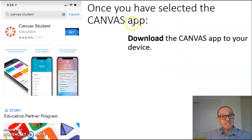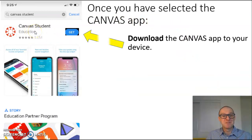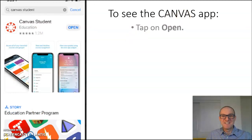Once you have selected the Canvas app, download the app to your device. To see the Canvas app, tap on Open.